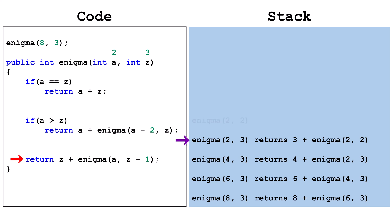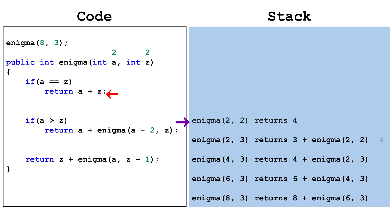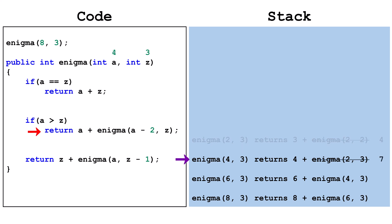a equals z is true, we've reached a base case and returned 4. This frame is popped off the stack. Now the next call can add 4 to 3, return 7, and pop the frame off the stack.